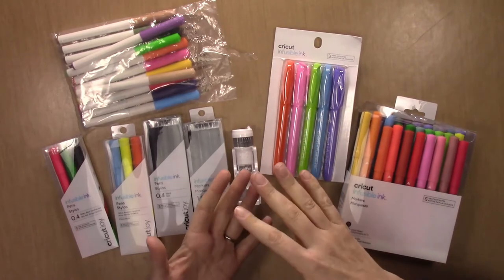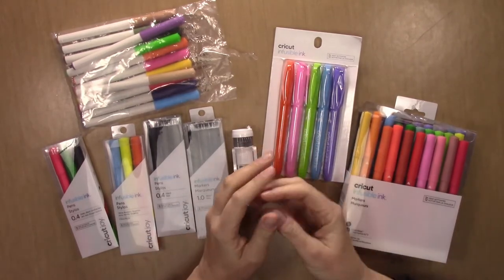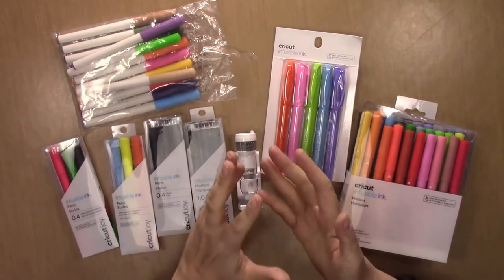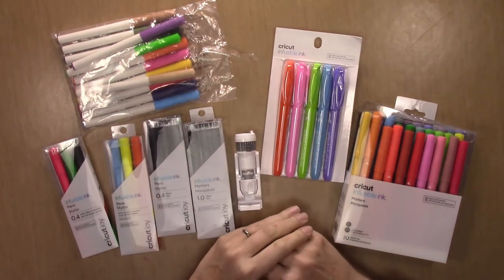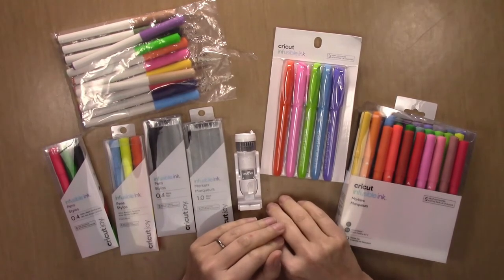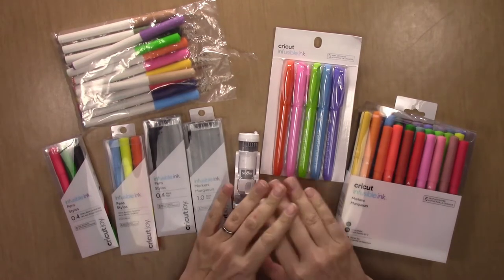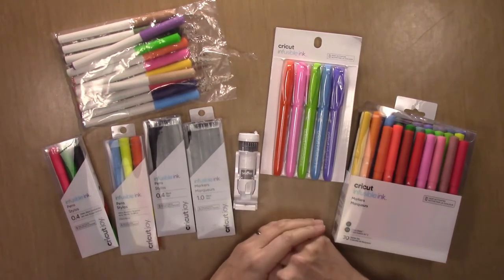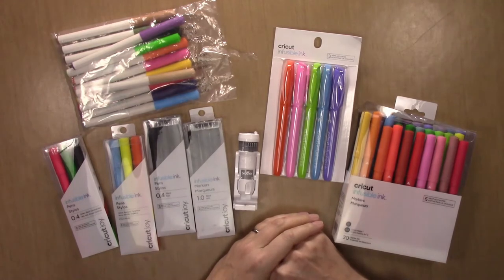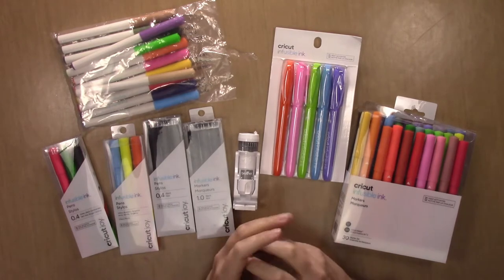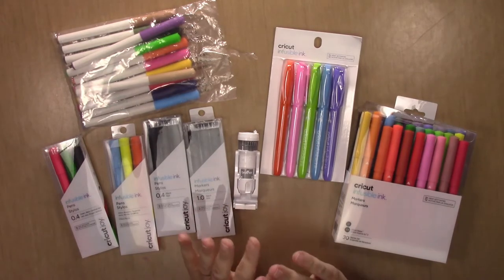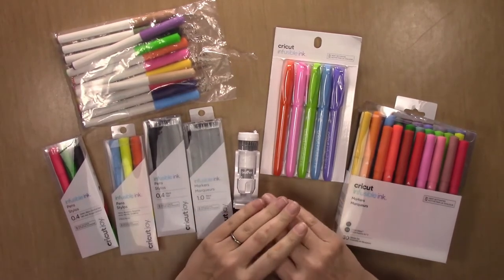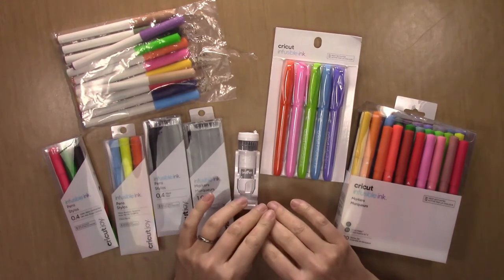It's sublimated into the surface of the blank you're using, whether that be a mug or a t-shirt. One thing you need to know is that it has to be a polyester based blank. You can't sublimate on cotton, but you could sublimate on things that are like 80 percent polyester, 20 percent cotton. The best blank to do it on would be 100 percent polyester.